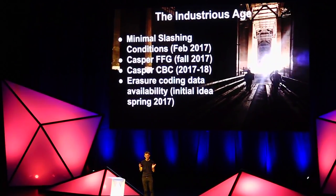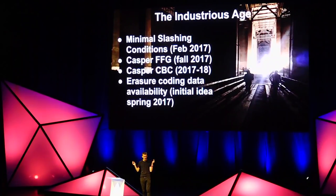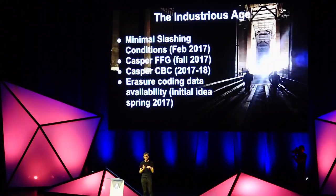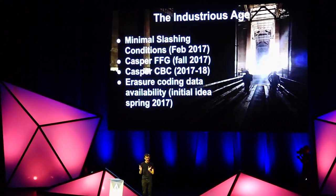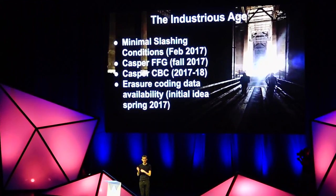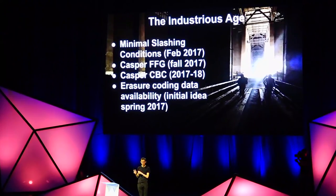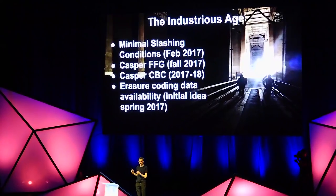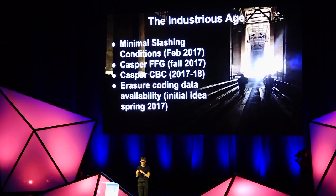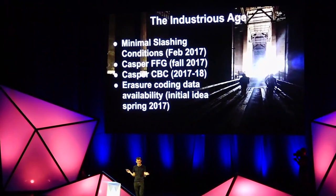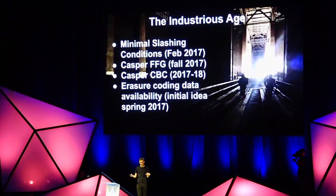So after this, we started making huge progress very quickly. During all of this time, there were these different strands of research going on: some around proof-of-stake and trying to do base-layer consensus more efficiently, some around scalability and sharding, some around improving the efficiency of the virtual machine, some around abstraction — allowing people to use whatever signature algorithms they wanted for their accounts, which could provide post-quantum security — and protocol economic improvements.